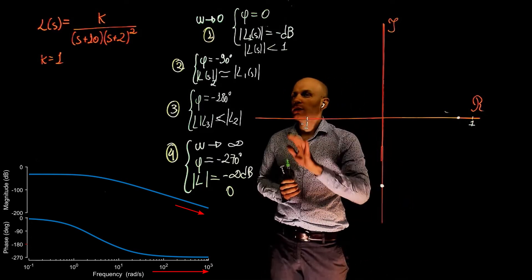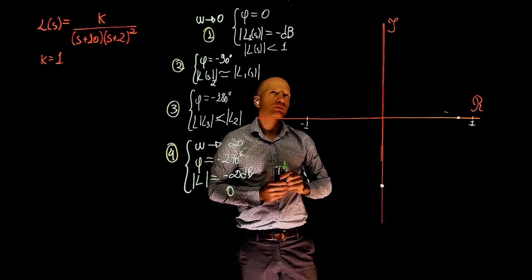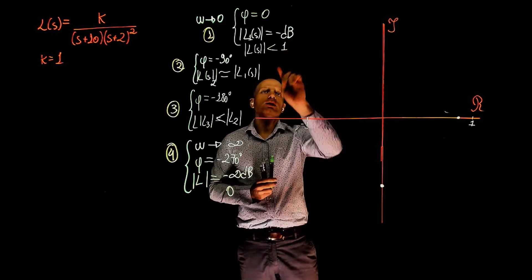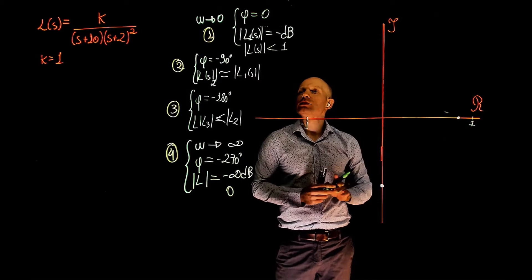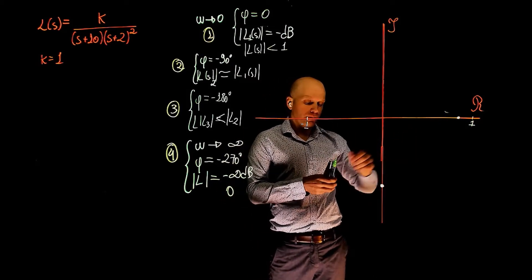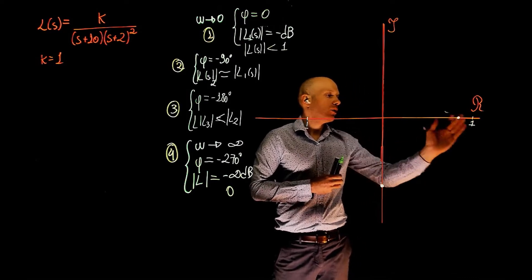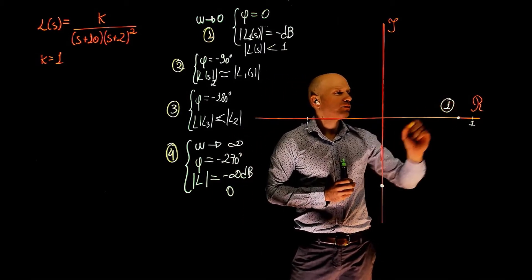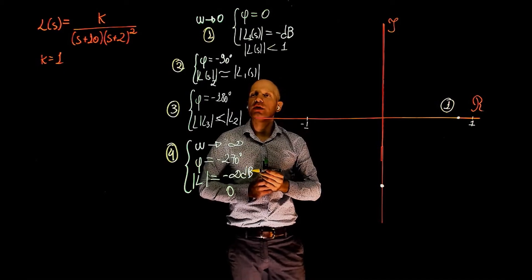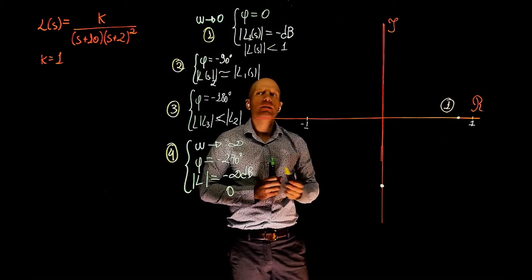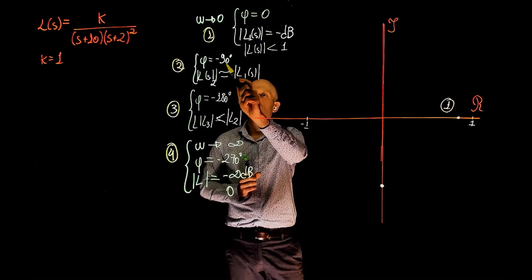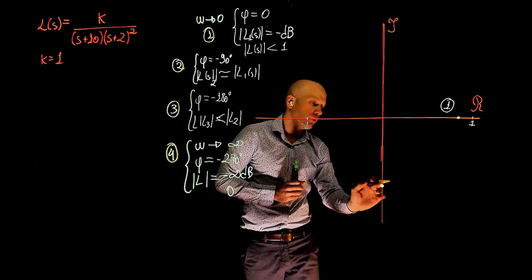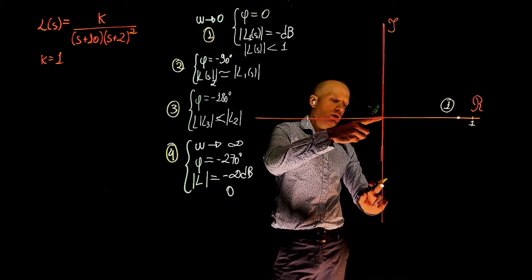Here we have the four points. Now we can place them on the Nyquist plot. Starting with point 1: the phase is 0, so we are on the positive real axis. The magnitude is smaller than 1, so we should be sitting to the left of 1. This is our point 1. For point 2, the phase is negative 90 degrees so we are on the negative imaginary axis, and the magnitude is almost the same as point 1, so we should be around here — this distance and this distance are pretty much the same.